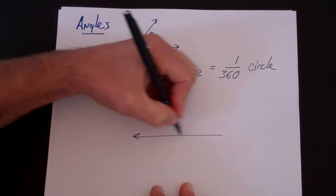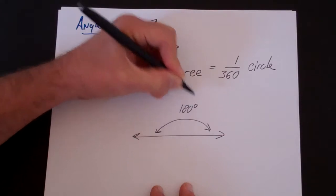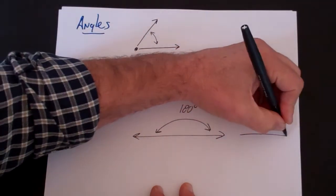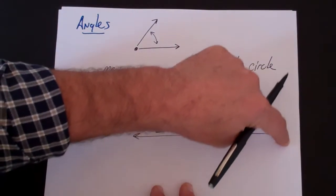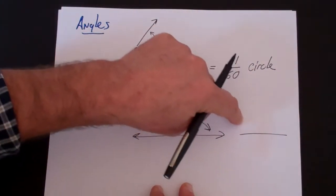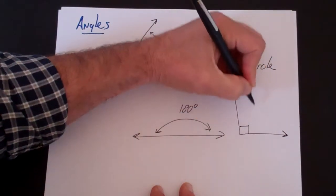So if you think about half a circle, we measure half a circle to be 180 degrees. If we would measure a quarter of a circle, if you go not halfway but half of halfway, then you get what's called a 90 degree angle or a right angle.